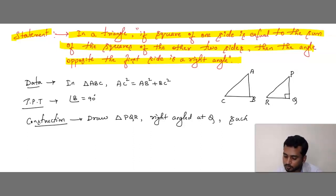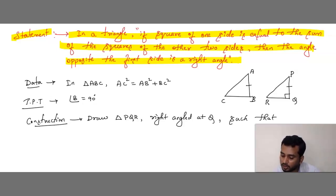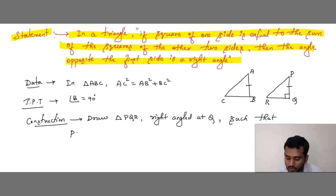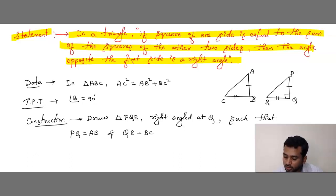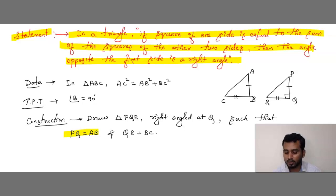Such that PQ is equal to AB, and QR is equal to BC. So in the construction we are assuming PQ = AB and QR = BC.